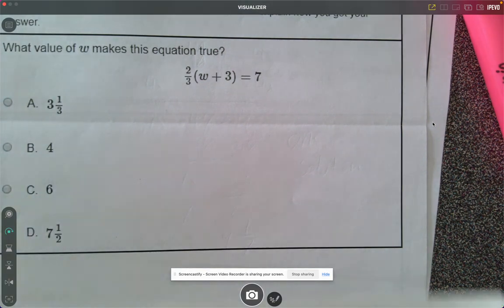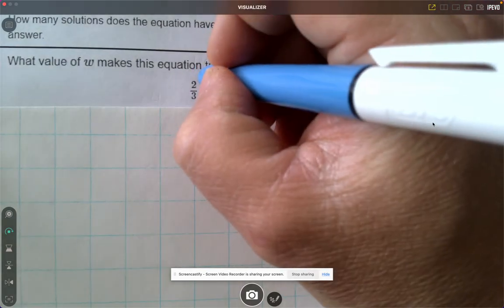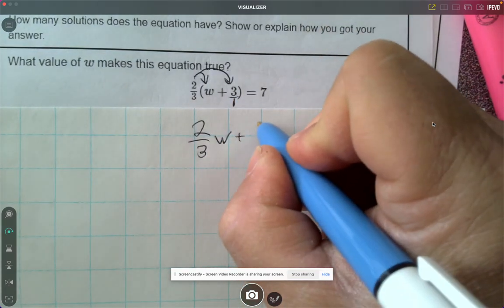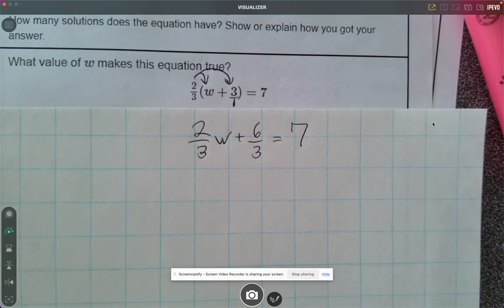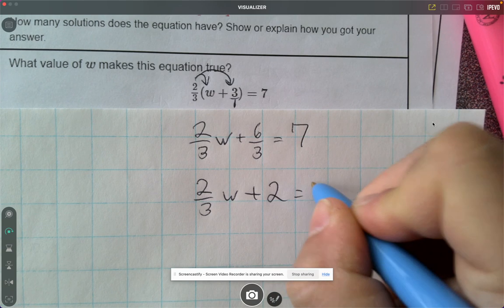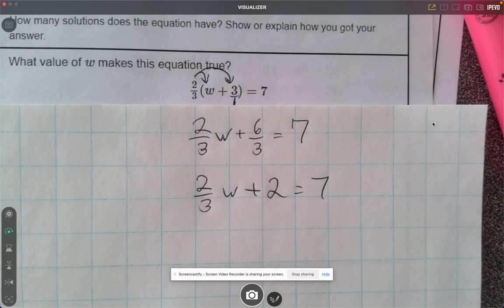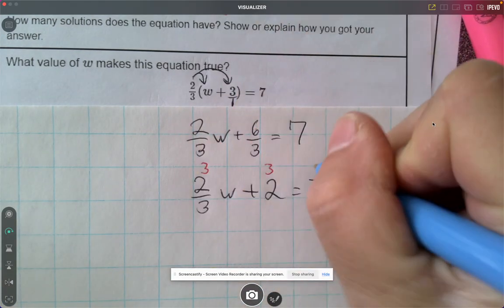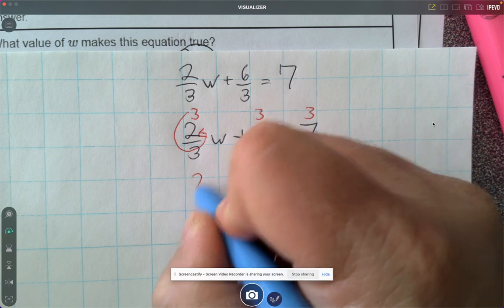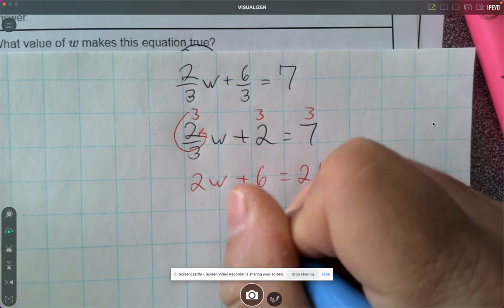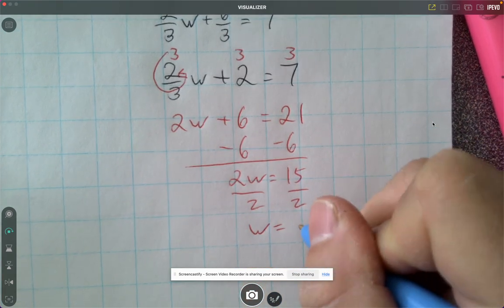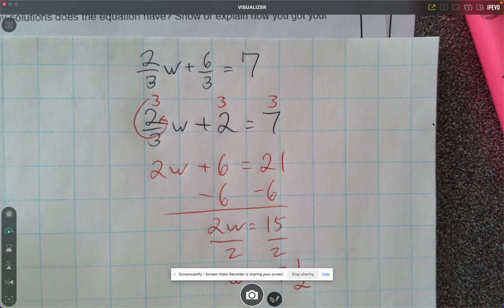Speaking of the g method, let's do the g method one more time with this example here. More distributing, distributing that fraction here and here. So I get 2 thirds w, this is over 1, plus 6 thirds equals 7. This time, my spidey senses are too strong. I'm just going to make that 6 divided by 3 is 2. So I'm going to make this 2 thirds w plus 2 equals 7. Now I can use my g method to clear the fraction. Some people might just minus 2, but I'm just going to clear it. I'm going to multiply everything by 3. Here, g method, that's just going to be 2w plus 6 equals 21.